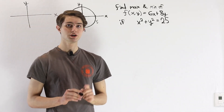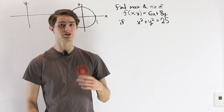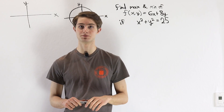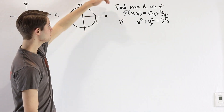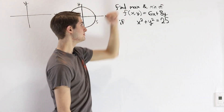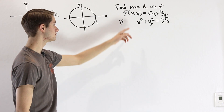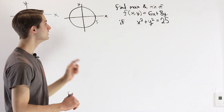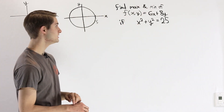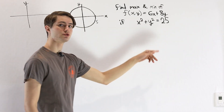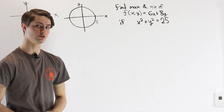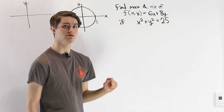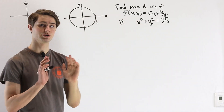We are going to talk about Lagrange multipliers and how to use them to solve constrained optimization problems. For example, let's say we wanted to find the maximum and minimum values of our function f equals 6x plus 8y under the condition that x squared plus y squared must equal 25. That final equation, x squared plus y squared equals 25, is our constraint.